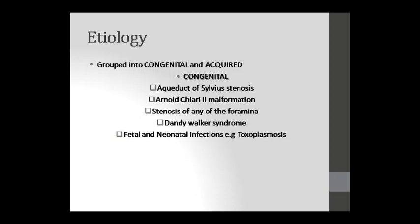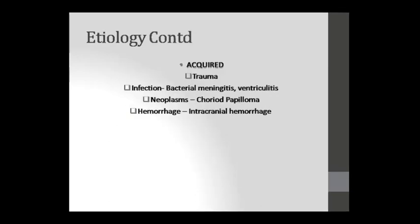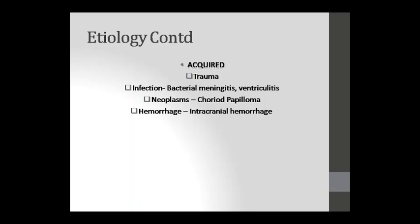Now, why does CSF accumulate if it is continuously circulating? The amount can increase due to two reasons — the etiology is seen from two causes: congenital and acquired. Congenital causes include aqueductal stenosis, Arnold-Chiari malformation, stenosis of a foramen, Dandy-Walker syndrome, and fetal/neonatal infections like toxoplasmosis. Acquired causes include trauma, bacterial meningitis infection, cancer such as choroid papilloma, and intracranial hemorrhage.